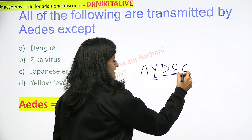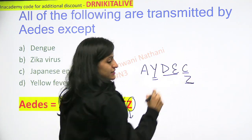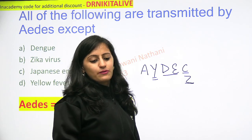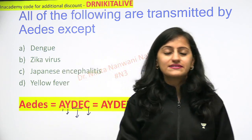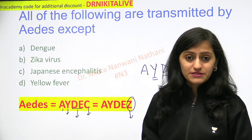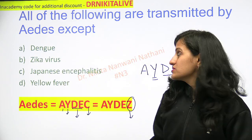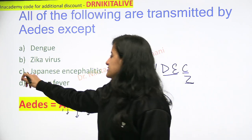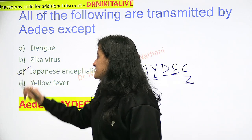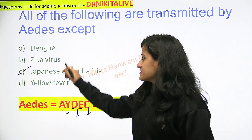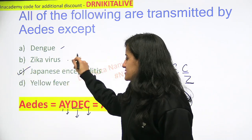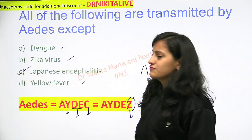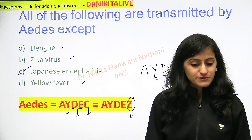So yellow fever, dengue, chikungunya, and Zika virus are the diseases transmitted by Aedes. Which is the incorrect option here? It is Japanese encephalitis, because dengue, Zika, and yellow fever are all transmitted by Aedes.